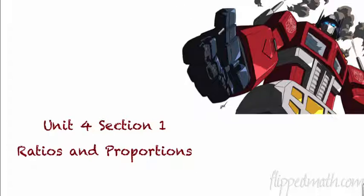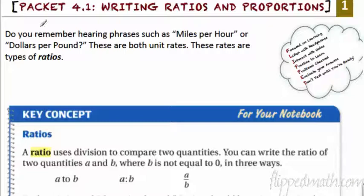We're talking about ratios and proportions. What is that? Optimus Prime. No more factors. Do you remember hearing phrases such as miles per hour or dollars per pound? I mean, what's the same between those two? The word per.